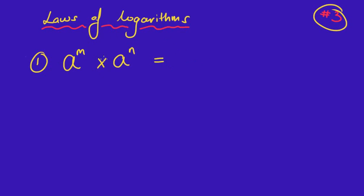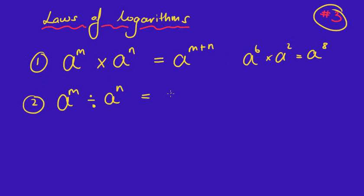So when the bases are the same, we learnt that we simply add the indices. For example, a^m times a^n equals a^(m+n). The second law we learned was the opposite of times, which is divide, which we do the opposite of plus, which is subtract.